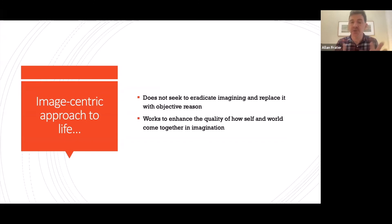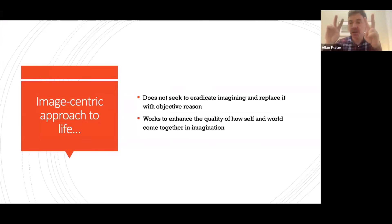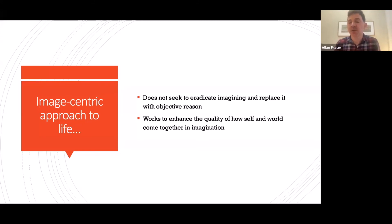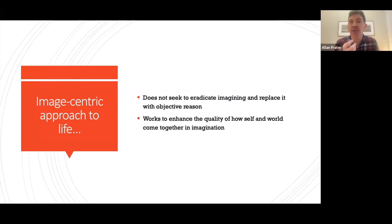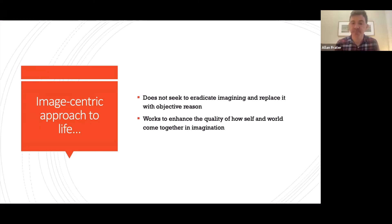There's also a little section on tree hugging I'm quite happy about, and lampposts. So people, places, and things are all imagined — there's no getting away from the imaginal nature of everyday life. The image-centric approach I lay out doesn't seek to eradicate imagining or replace a faulty imagining with objective reason. What it does is seek to enhance the quality of how self and world come together in imagination, because images exist in liminal space between us and the world. If we attend to that in-between interaction, we can heal ourselves, we can change, we can be creative.